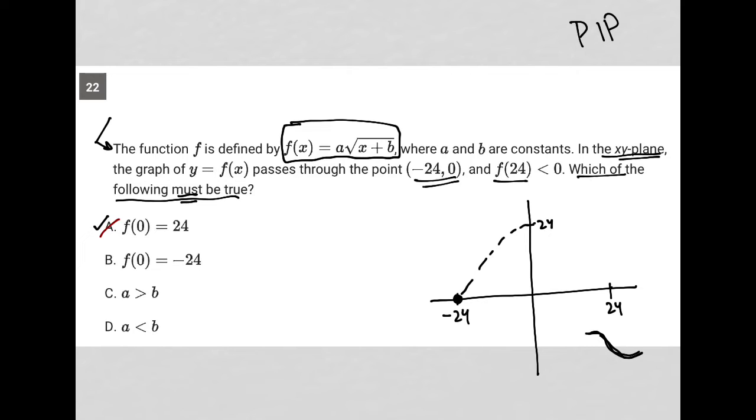How about choice B, f(0) = -24. So that takes us down here to negative 24 on the y-axis. Does it have to be true that I have a point here on the y-axis at negative 24? No, there's no reason. There's nothing here provided in the visual that I have that would make that true. So that's gone.